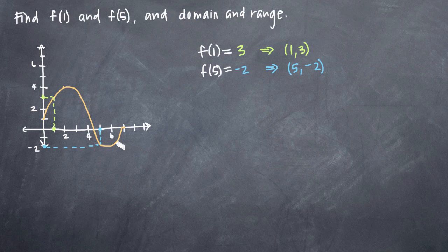That means that when we plug in 5 to our function, we'll get back a value of negative 2, or when we plug in 1 to our function, we'll get back a value of 3.